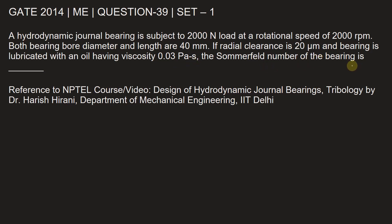number of the bearing is? Let's write the given information first. It is given that the load on the bearing W is 2000 Newton. Rotational speed of the bearing Ns is 2000 rpm. Bearing diameter and length both are 40 millimeters, so diameter of bearing d equals